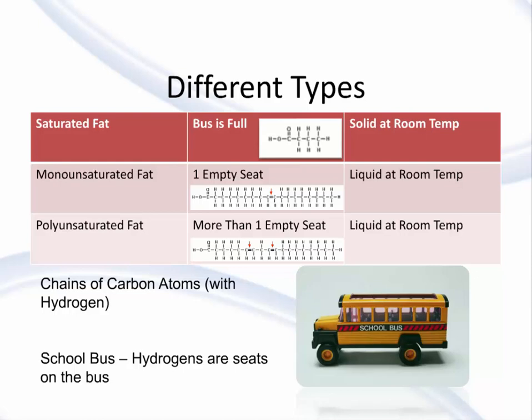Very easy take-home points for consumers: saturated fats, as a general rule of thumb, are solid at room temperature. Think of foods like butter, animal fats, and shortening — which is both saturated and trans fat, which we'll talk about. Monounsaturated fats and polyunsaturated fats are liquid at room temperature. Think about the vegetable oils, olive oil, canola oil, flax oil, and fish oil — those are all liquid at room temperature. That's easy for a client to think about.